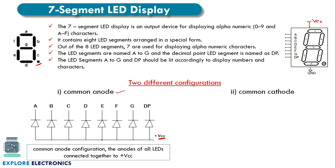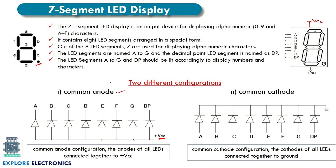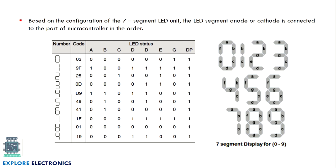In the common cathode method, the cathodes of all the LEDs are connected to ground, and we need to pass 1 from the anode side to turn the LED on. For example, if A equals 1 the A segment LED will be on; if D equals 1 that LED will be on. Here in common anode, if D equals 0 the LED is on; if A equals 0 the LED is on. Let us see how the numbers are displayed with respect to these codes.